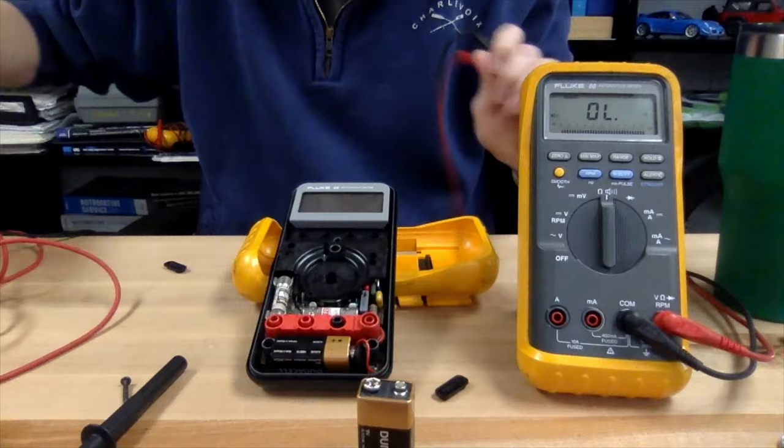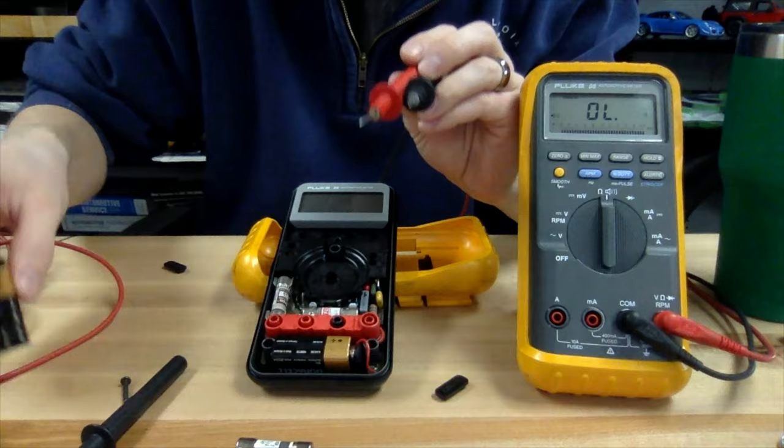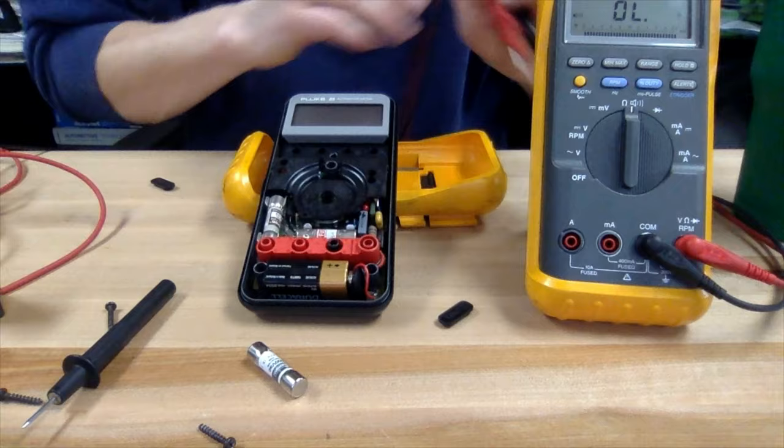I picked up some replacement fuses on Amazon. I'll put a link in the description below in case you happen to have one of these Fluke 88 multimeters. This fuse tests out good, so we'll swap it out and put our multimeter back together.